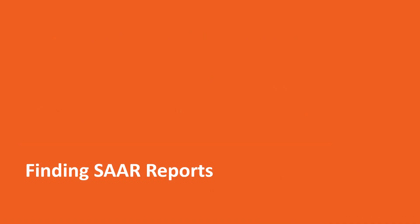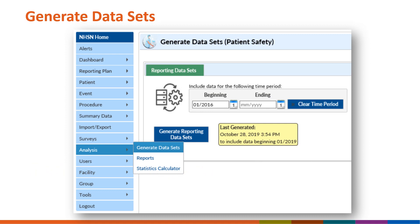Now that we've reviewed some of the differences between the original 2014 baseline SAR and the 2017 baseline SAR, let's look at where to find the SAR reports in NHSN. Prior to running any NHSN analysis report, we need to generate new datasets. After logging into NHSN, navigate to analysis on the left-hand navigation bar, select generate datasets, and click the generate new button. It can take several minutes to generate datasets.